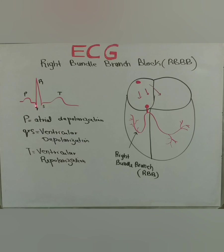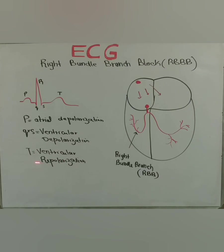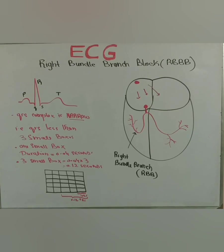The first downward deflection is Q, then it's R, and then it's S. When the ventricles repolarize — meaning the inside of the cells becomes negative and the outside stays positive — this is what we call repolarization, and that ventricular repolarization is represented on the ECG paper as the T wave. As a result of ventricular depolarization, a narrow QRS complex is produced.